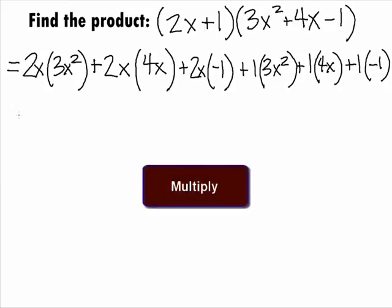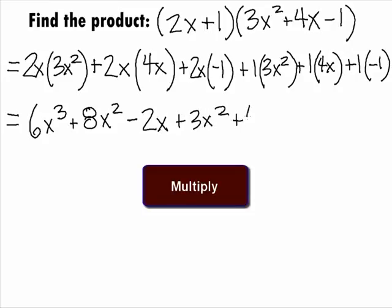Multiplying these products out, we get 6x cubed plus 8x squared minus 2x plus 3x squared plus 4x minus 1.